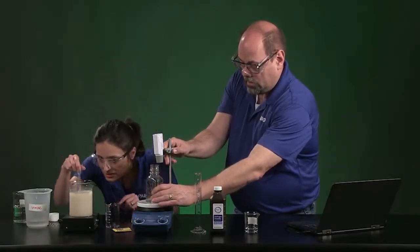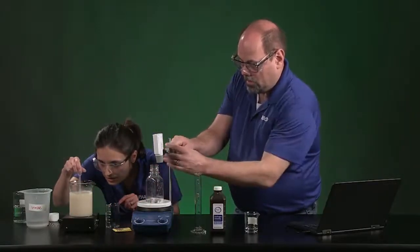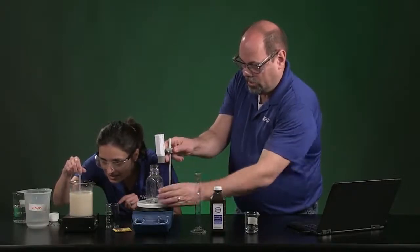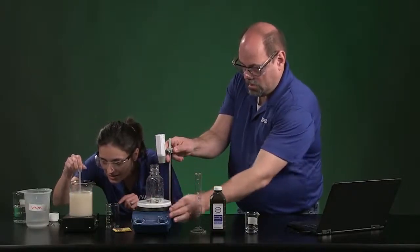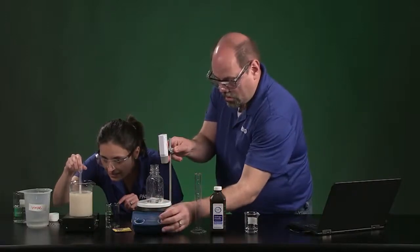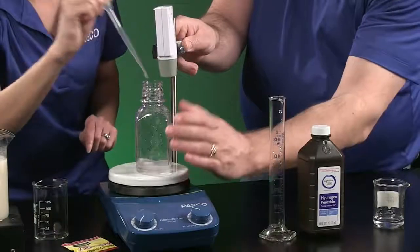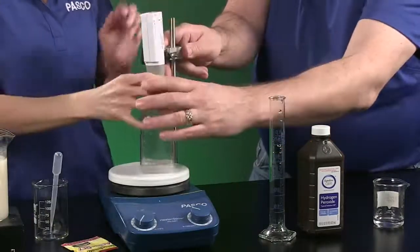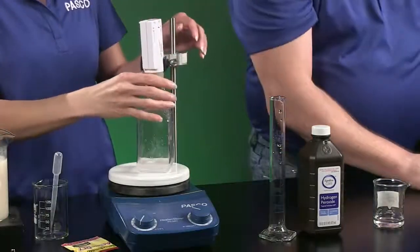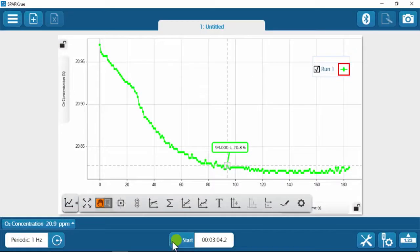So now we're going to add the catalyst. And I'm going to get two milliliters. Ready? I'm ready. Let's start the stirrer. Ready, set, go. Go ahead and start. Start a second run.